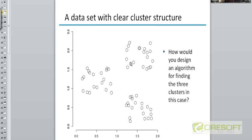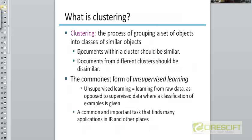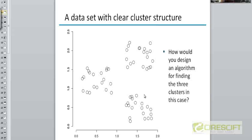Here's a data set where there is a clear cluster structure. You can see just with the naked eye that there are three different clusters in this data set. The question is: how do we design an automated algorithm for finding these three clusters? We will use the same intuition as before — documents belonging to the same cluster are going to be very similar to one another, and documents belonging to different clusters are going to be dissimilar. That's the overall intuition we use to end up with an assignment of documents to different clusters.